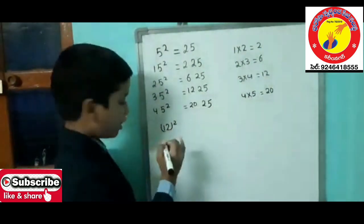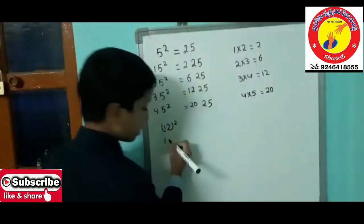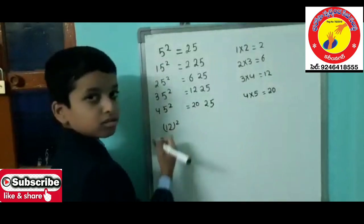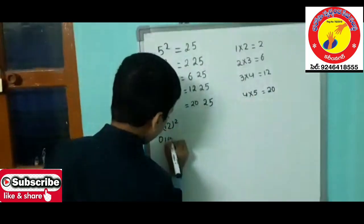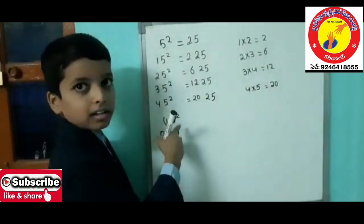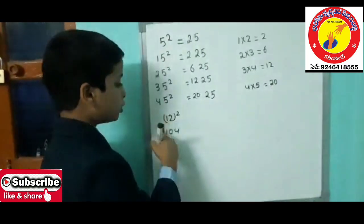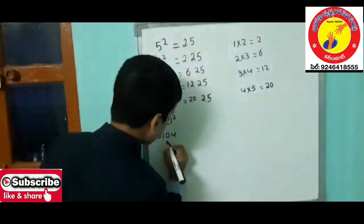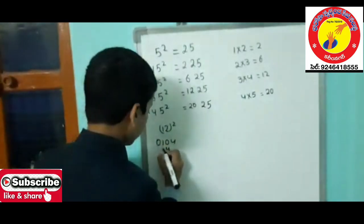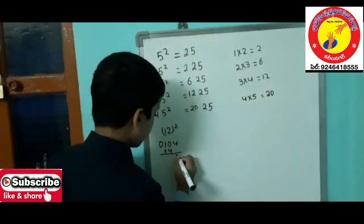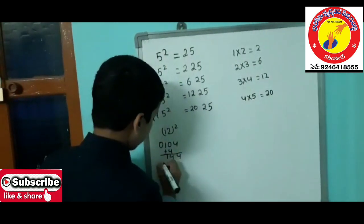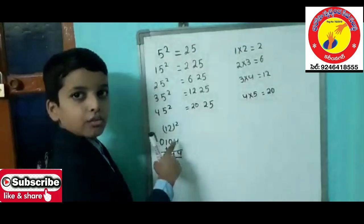For 12 squared: 1 squared is 1, write as 01. 2 squared is 4, write as 04. Now multiply the digits: 1 times 2 is 2, then 2 times 2 is 4. Leave 1 place and write 4 in the tens space. Add them: 4, 0 plus 4 is 4, 1. So 144 is the square of 12.